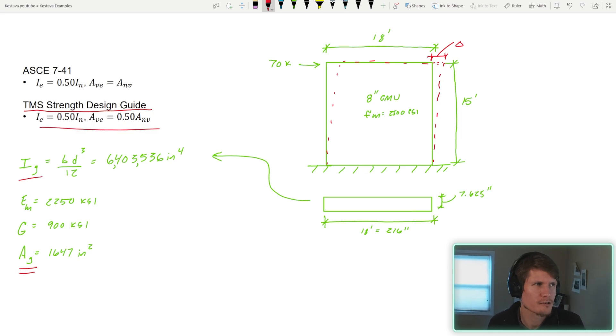They suggest the following for in-plane displacement analysis. In-plane analysis is just when there's the load in-plane with your wall and it's pushing on it and it's displacing it. They suggest that I sub E taken as one half your gross moment of inertia, but they also suggest that your cross-sectional area should also be taken as half or 0.5. Interesting take.